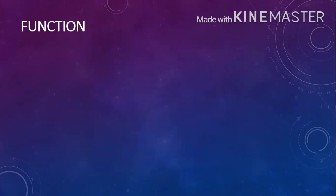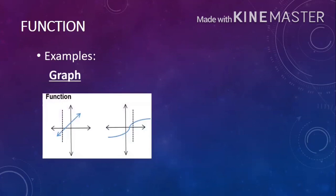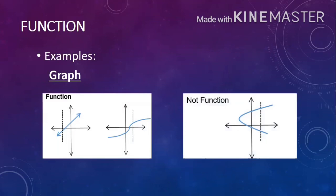Now, how can we determine if a given graph is a function? It is through the vertical line test. If the graph and the vertical line only meet at one point, then the graph is a function. But if the graph and the vertical line meet at two or more points, then the graph is not a function. You can place the vertical line test anywhere on the graph.